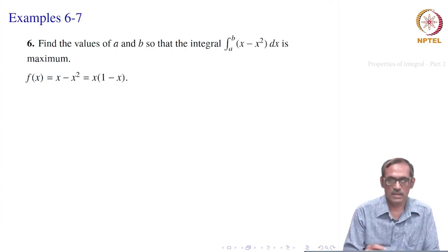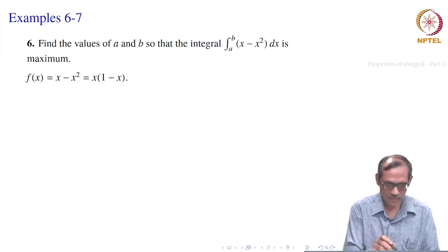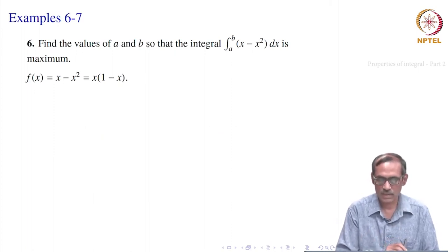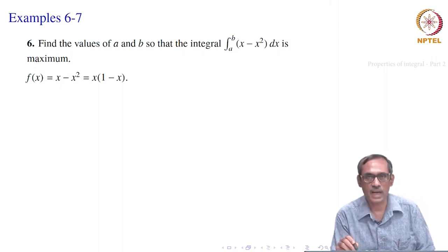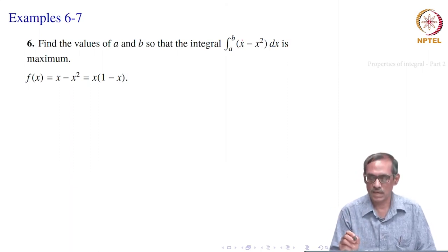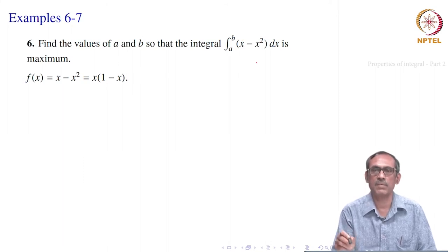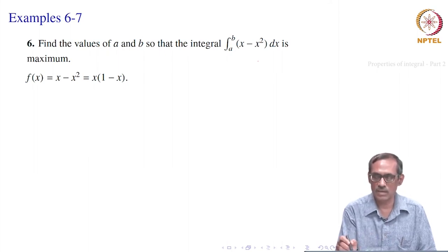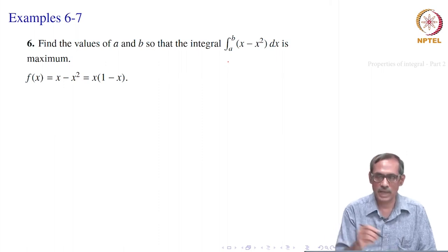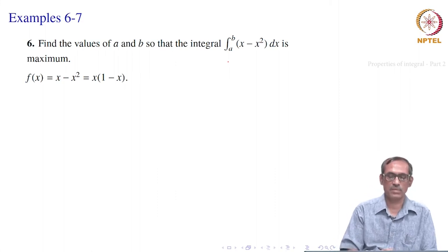Find the values of a and b so that ∫ₐᵇ (x − x²) dx is maximum. Here a and b are not given — they are unknowns, and the definite integral depends on both. The question asks us to choose a and b so that this integral achieves its maximum value.